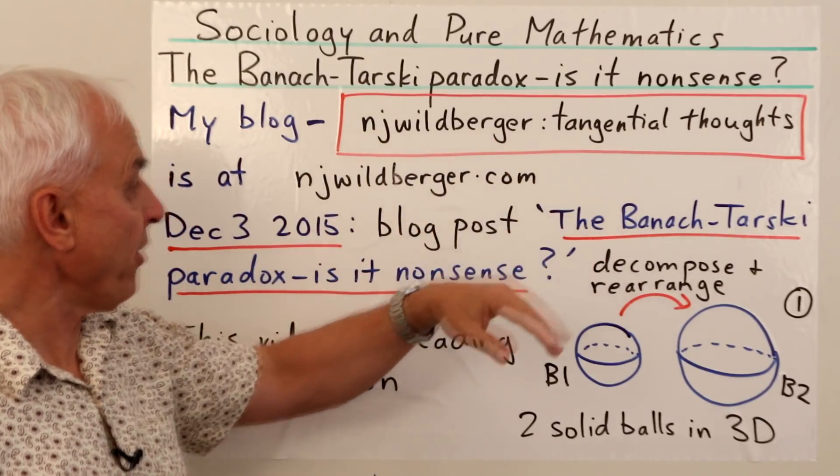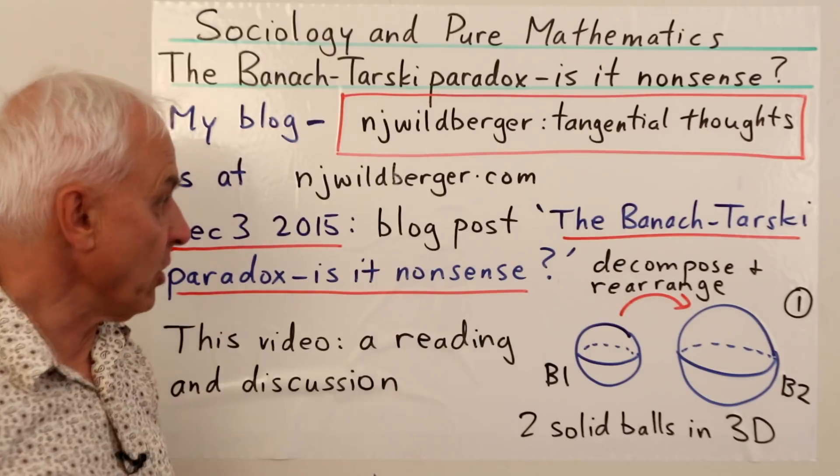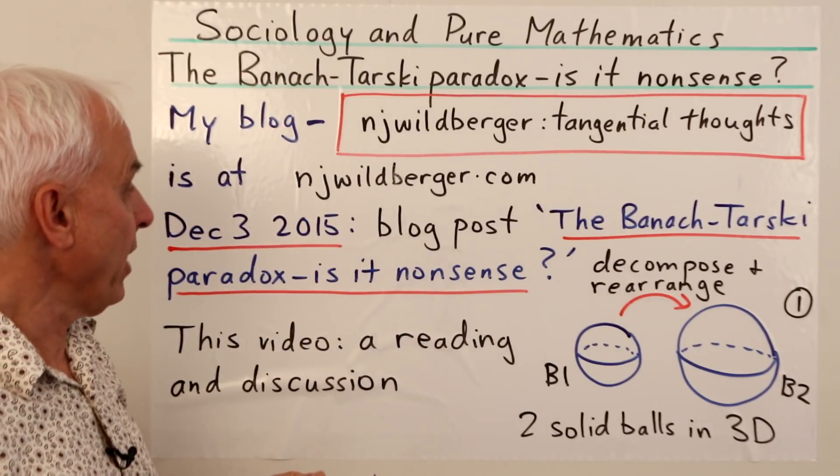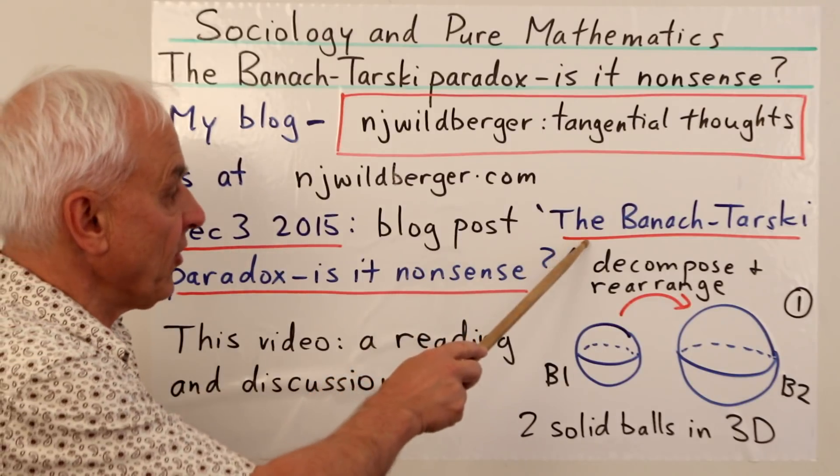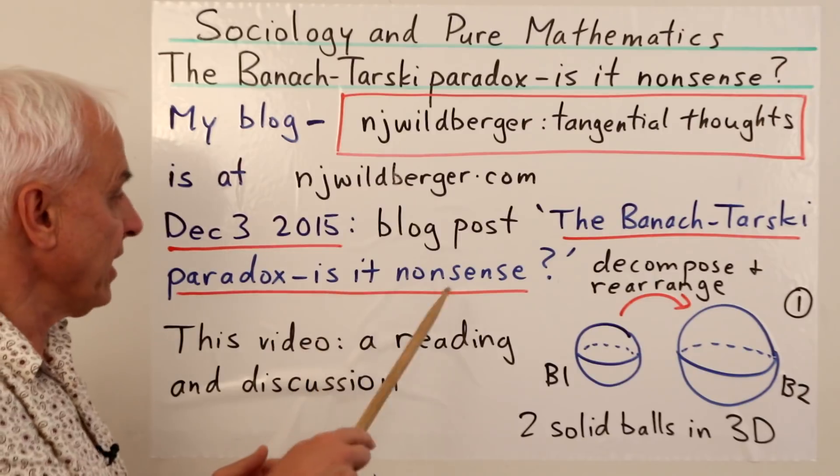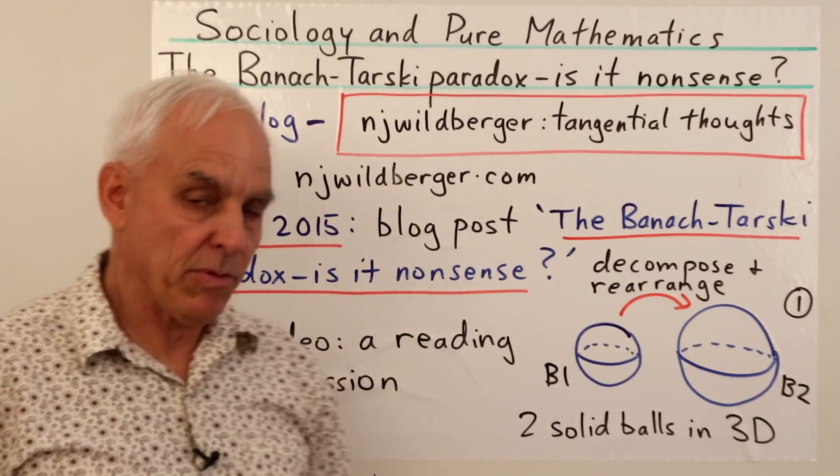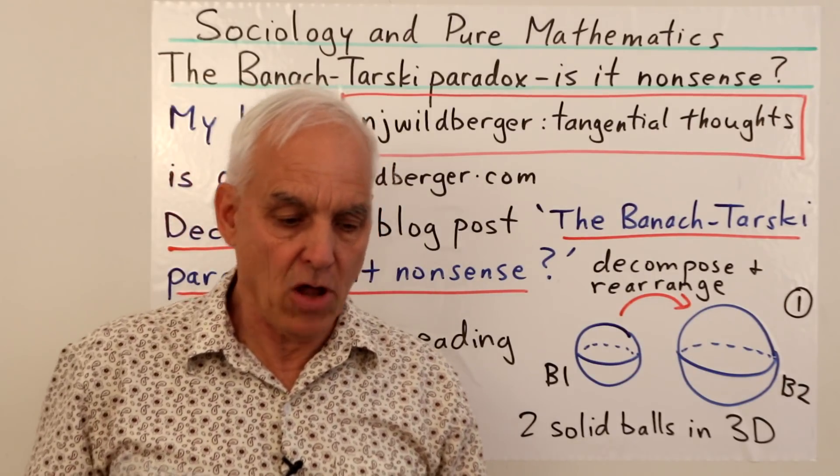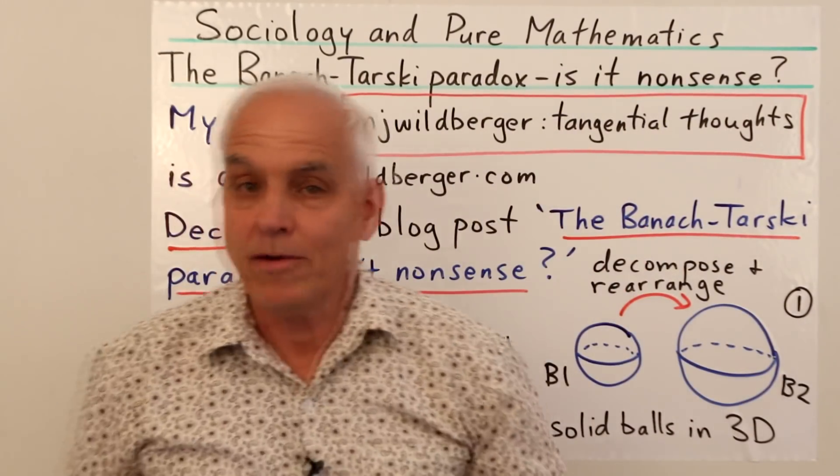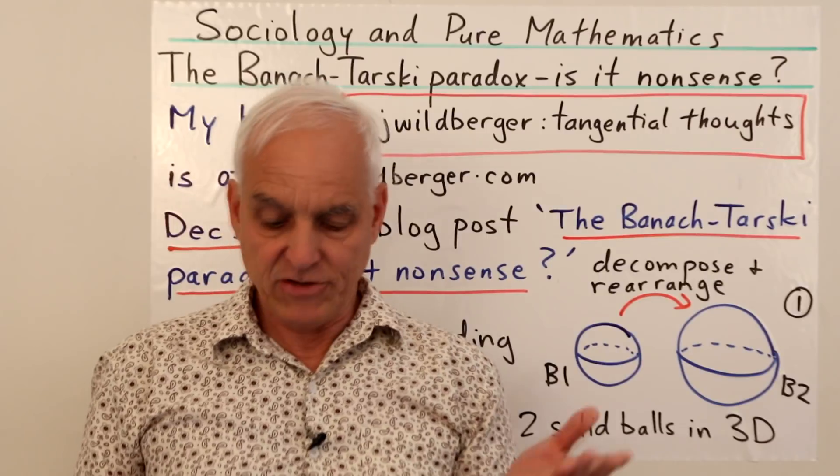So this is actually from my blog. I have a blog called N.J. Weilberger: Tangential Thoughts. You can find it at njwellberger.com. About five or six years ago I posted this blog post called 'The Banach-Tarski Paradox: Is it Nonsense?' and I propose to read it to you. It's not that long and then we'll have a little bit of a discussion.